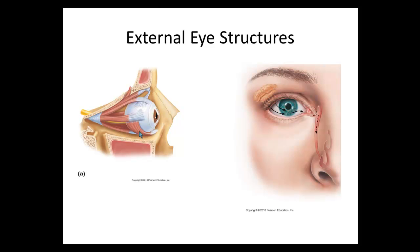The palpebrae is just another name for the eyelids. They act as windshield wipers, distributing tears produced by the lacrimal gland in the upper corner of the eye across the surface of the eyeball. That blinking is what keeps our eyes moist.